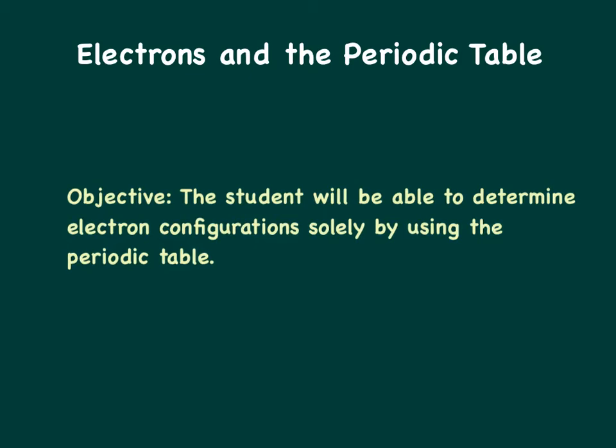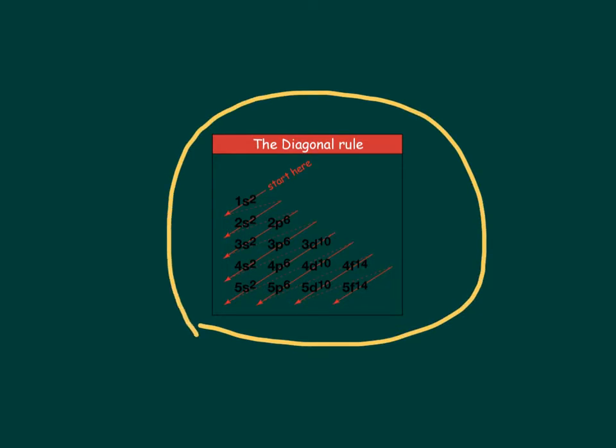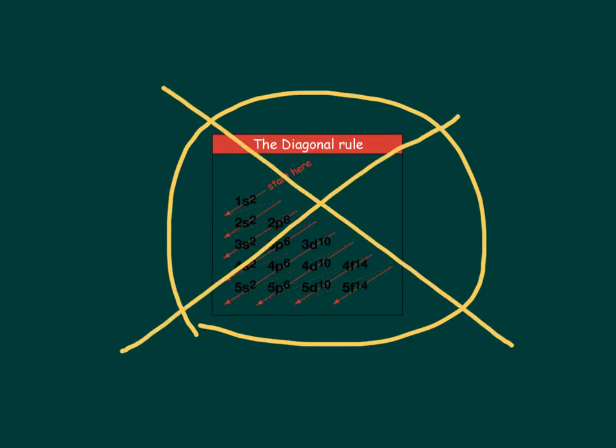As you're going through this, don't write down all the electron configurations that are already typed on here. But if I write them down, then you should write them in your notes. Well, up until now, we've been using the diagonal rule to write electron configurations. And it's worked out pretty well for us. But after this, we're not even going to need the diagonal rule. In fact, we're going to be getting rid of that altogether. You're not going to need it because you're just going to follow the periodic table. Hold on and you'll find out how.